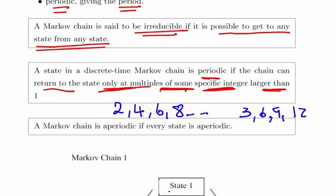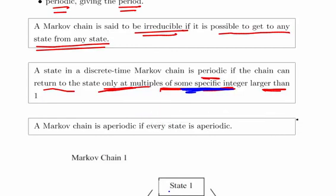It's actually one or the other—it has to be one specific integer. It can only be one specific integer. If you can get back in two phases one way and then get back in three phases another way, that means it's not periodic.